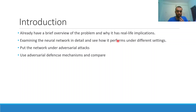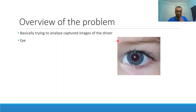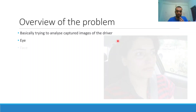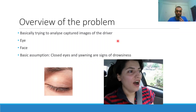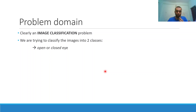To give an overview of the problem, we are basically trying to analyze captured images of the driver — we have images of the eye and images of the face. From these two we want to detect if the driver is drowsy or not. Our basic assumption is that closed eyes and yawning are signs of drowsiness. This problem clearly belongs to image classification: for eye images we classify open or closed, and for face images we classify yawning or not yawning.